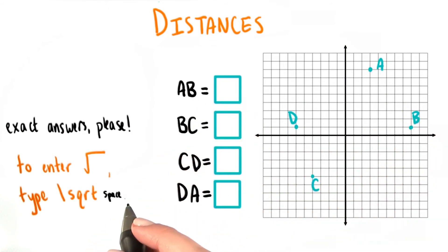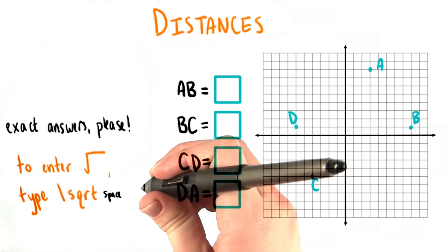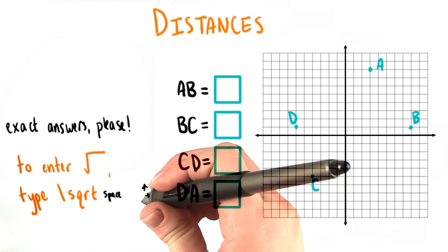To help you do this, I'd like to remind you that if you want to enter a square root sign using mathquill, you need to type the keys backslash sqrt and then the spacebar. Then you can use your arrow keys to move your cursor around.